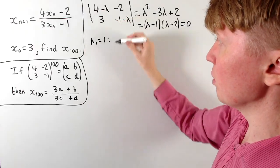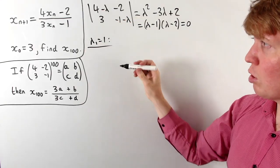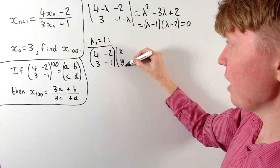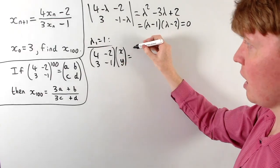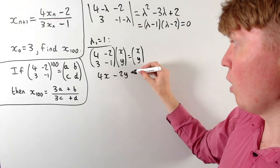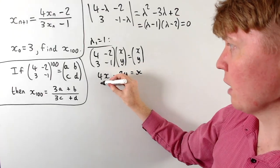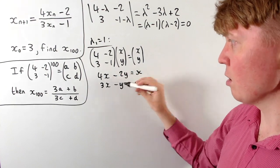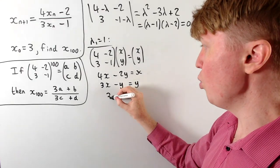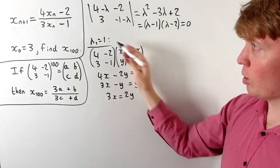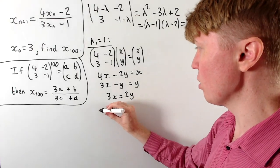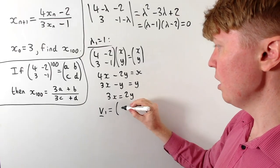For eigenvalue λ₁ = 1, we apply the matrix [4, −2; 3, −1] to vector [x; y] and set it equal to 1 times [x; y]. This gives simultaneous equations 4x − 2y = x and 3x − y = y, both reducing to 3x = 2y. Taking x = 2 and y = 3, our first eigenvector is [2; 3].